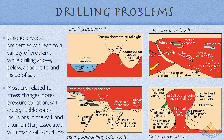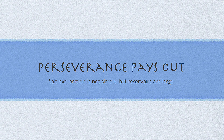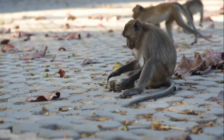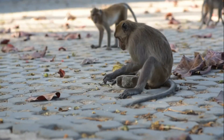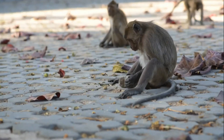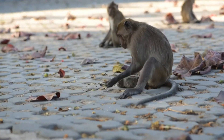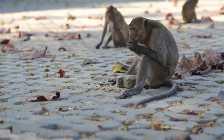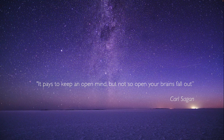Halokinetic hydrocarbons are not easy — one must persevere. Salt exploration is not simple, but the potential reservoirs can be quite large, and most of the giant fields discovered in the last 20 years have a halokinetic association. Like this Marrakech monkey, perseverance pays off — whether you're trying to break open a sea almond with a cobblestone or trying to drill and discover a salt-related province. And as Carl Sagan once said: be aware, be ready to modify your hypotheses. There's no such thing as the perfect model — it always pays to keep an open mind, but not so open that your brains fall out.